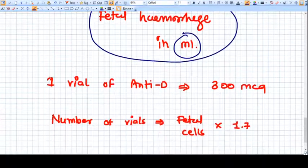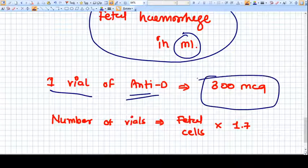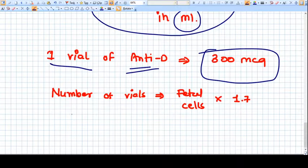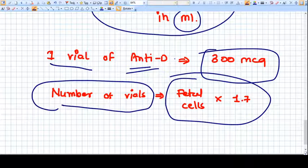If you know that one vial of anti-D consists of 300 micrograms, the number of vials we need to give as a dose of anti-D for prophylaxis of anti-immunity or immunity formation, number of vial is equal to fetal cells times 1.7.